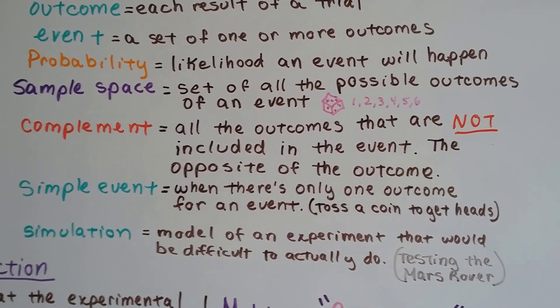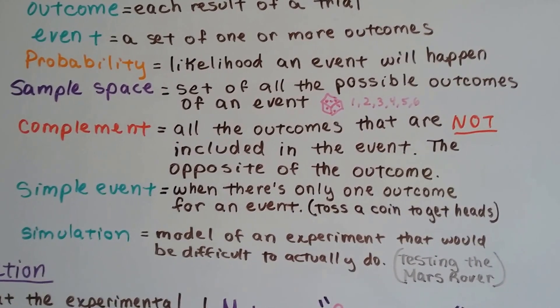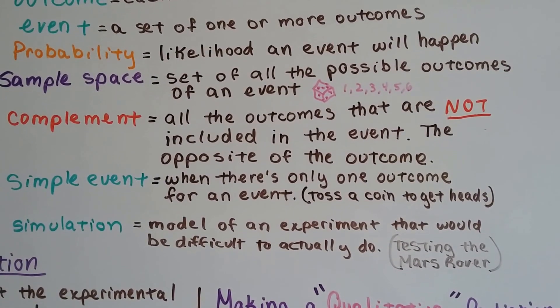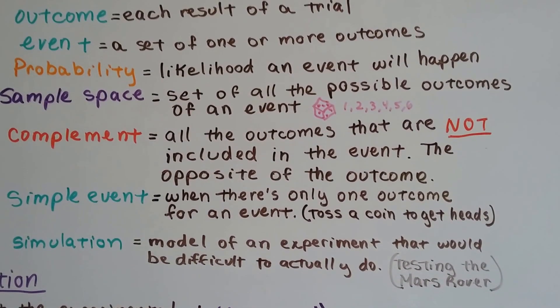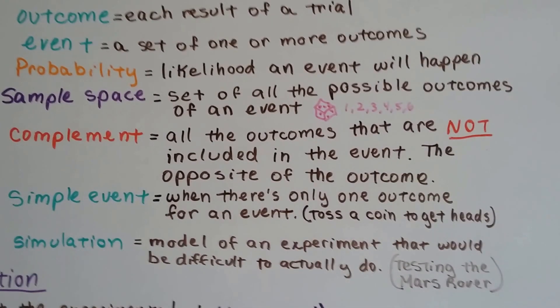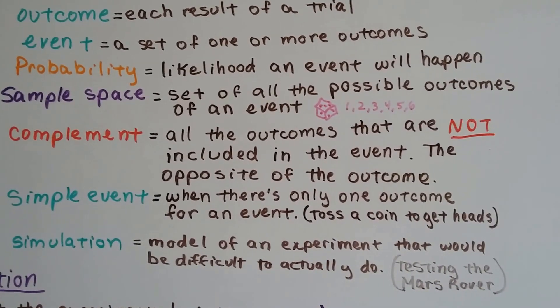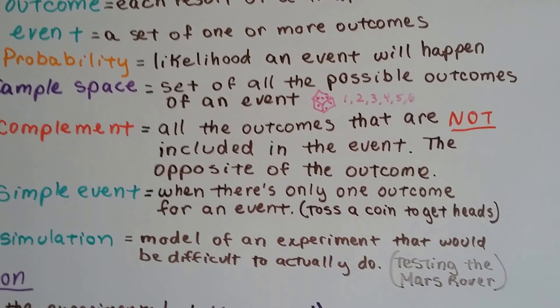A simple event would be there's only one outcome for an event, like if we're going to toss a coin to get heads. And a simulation is the model of an experiment that would be difficult to actually do. It would be like testing the Mars rover. They had to do a simulation in the lab because they couldn't build it and test it on Mars itself.